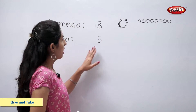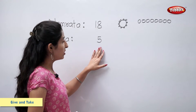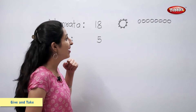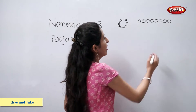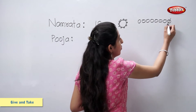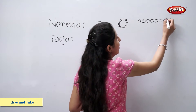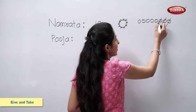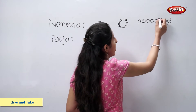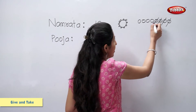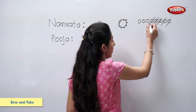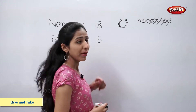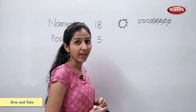She gave 5 pearls to Pooja. 1, 2, 3, 4 and 5. 5 pearls are taken away by Pooja.